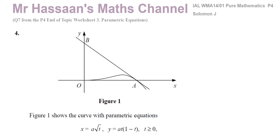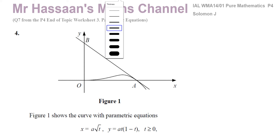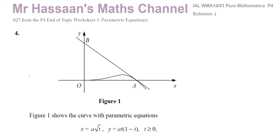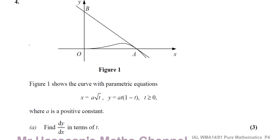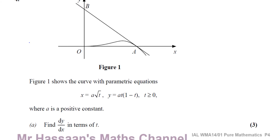In this question, we have a graph that's shown. Figure 1 shows the curve with parametric equations x equals a root t and y equals a t times 1 minus t, where t is greater than or equal to 0 and a is a positive constant. Part a asks us to find dy/dx in terms of t.